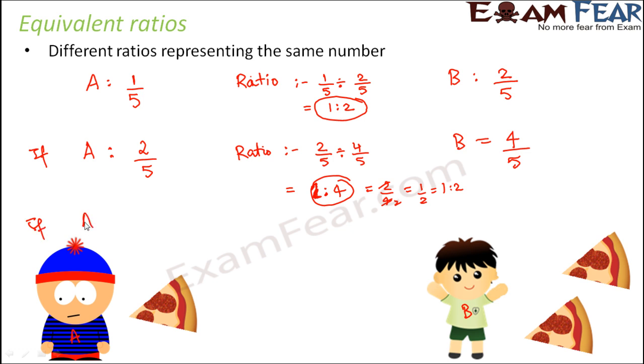Let's say that if A would have eaten five slices out of ten slices of pizza—maybe you have two pizzas or a bigger pizza with ten slices—and A ate five slices out of ten. And let's say that B ate ten slices out of ten slices, meaning B ate the entire big pizza. So in this case, what would be the ratio?